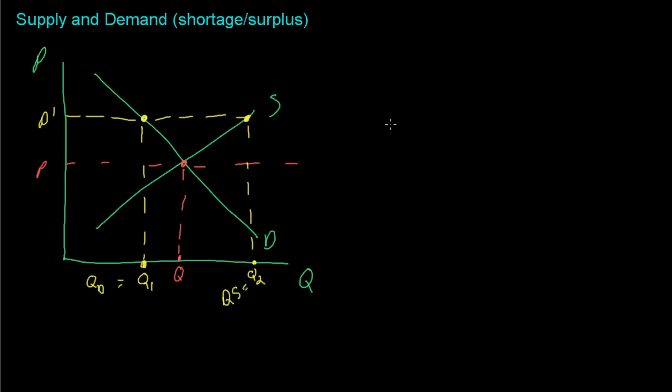So if price is too high, then we supply more than is demanded. And I should say that this is the quantity supplied is more than the quantity demanded. And that's what we call a surplus.